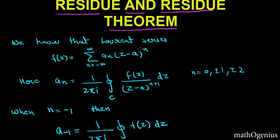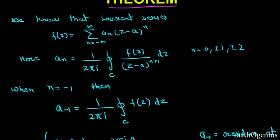Now let's extract what is residue from the Laurent series. We know that this is the Laurent series, this is the expression for f(z) expansion of Laurent series. We know this and we know that the value of a_n is this.